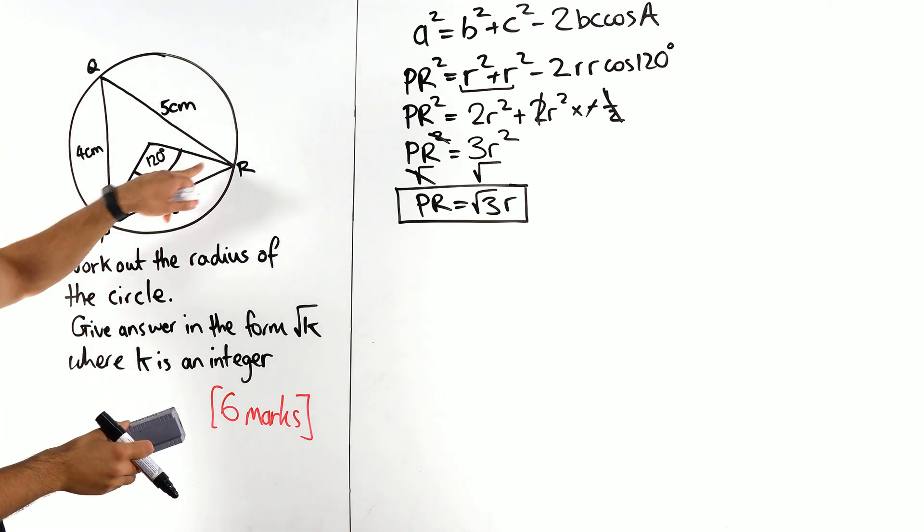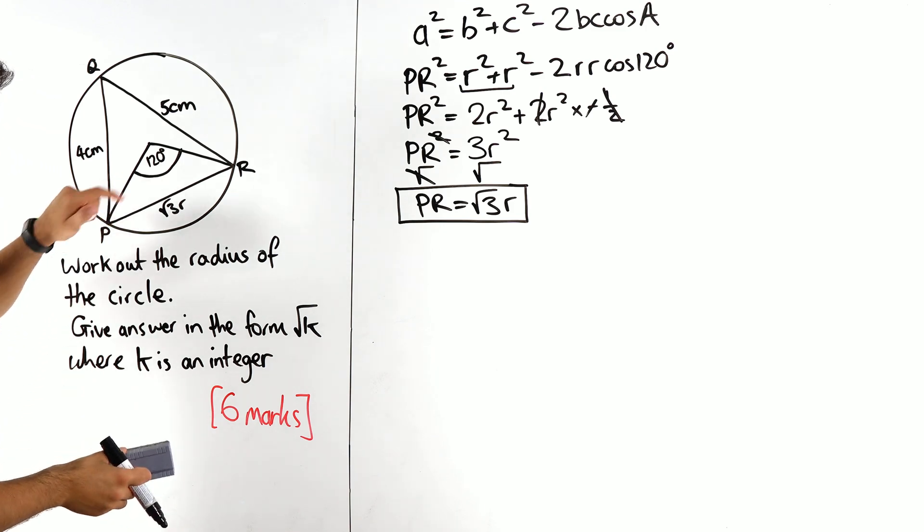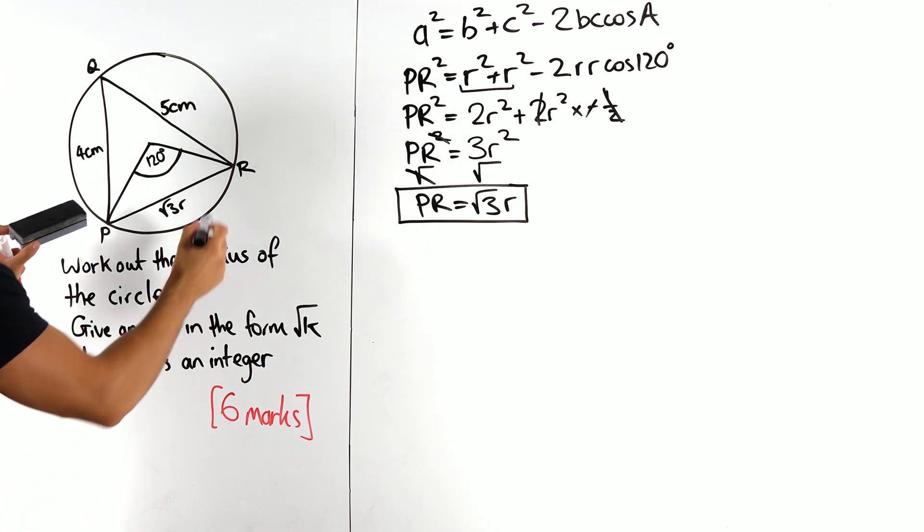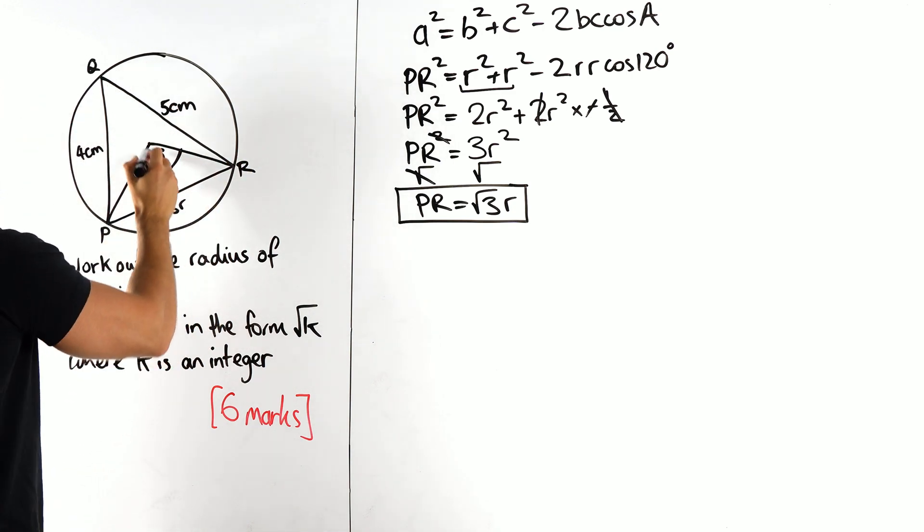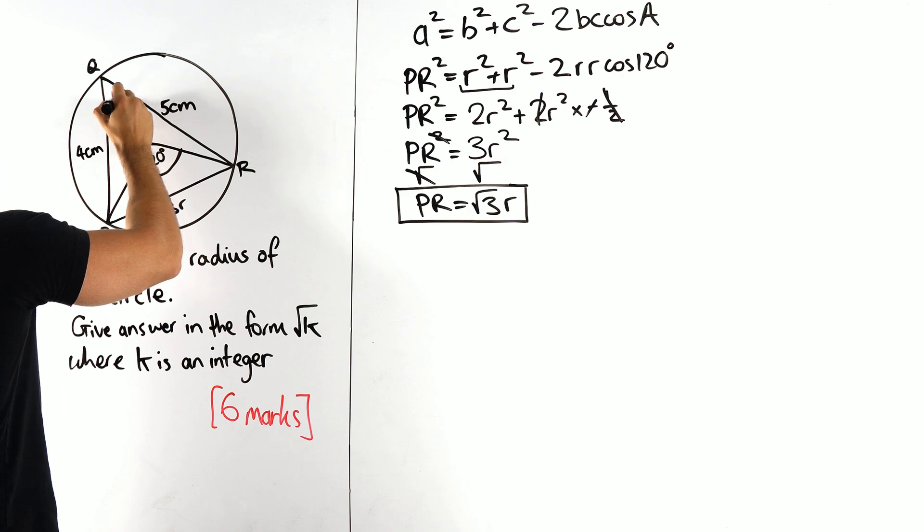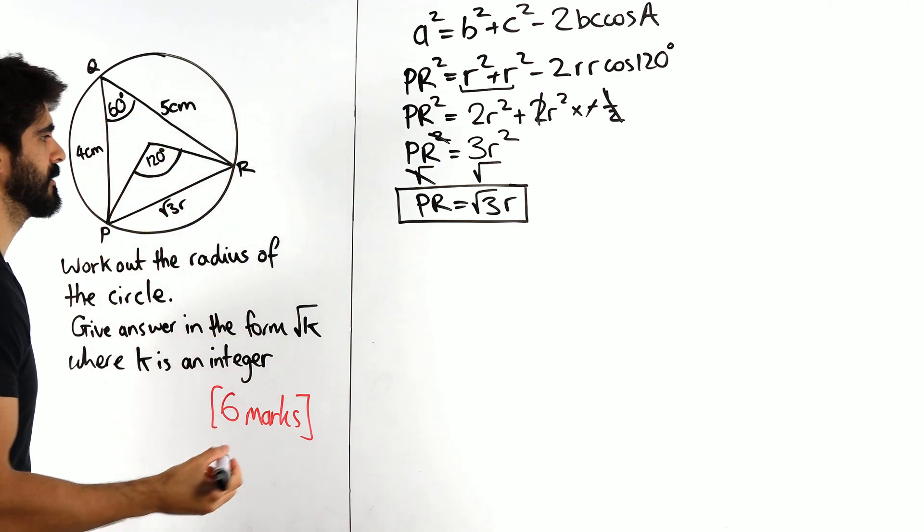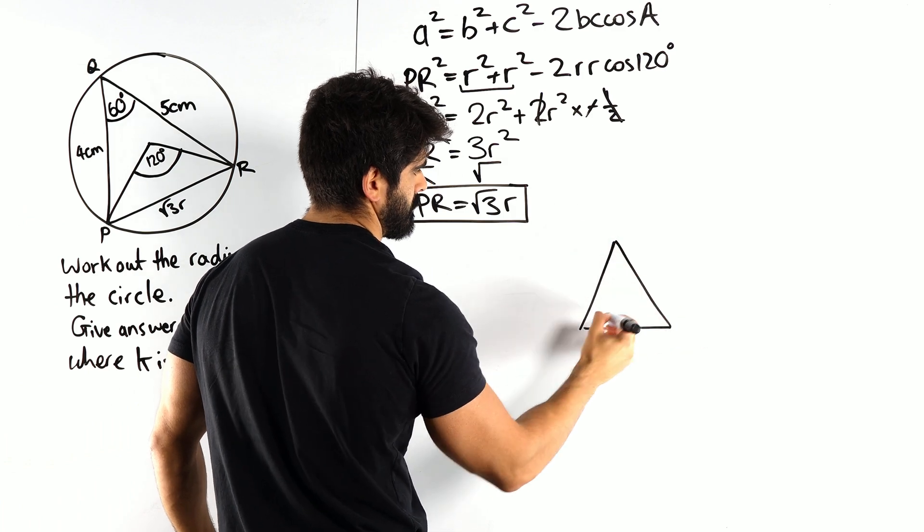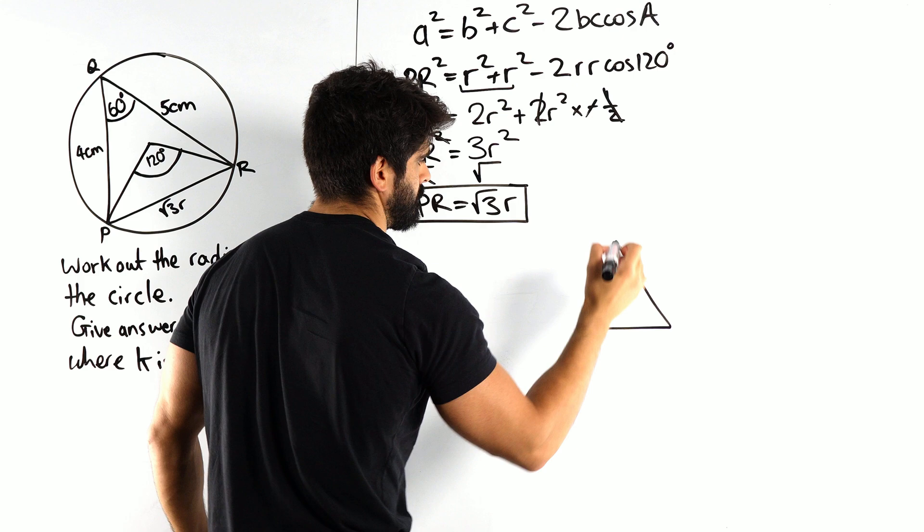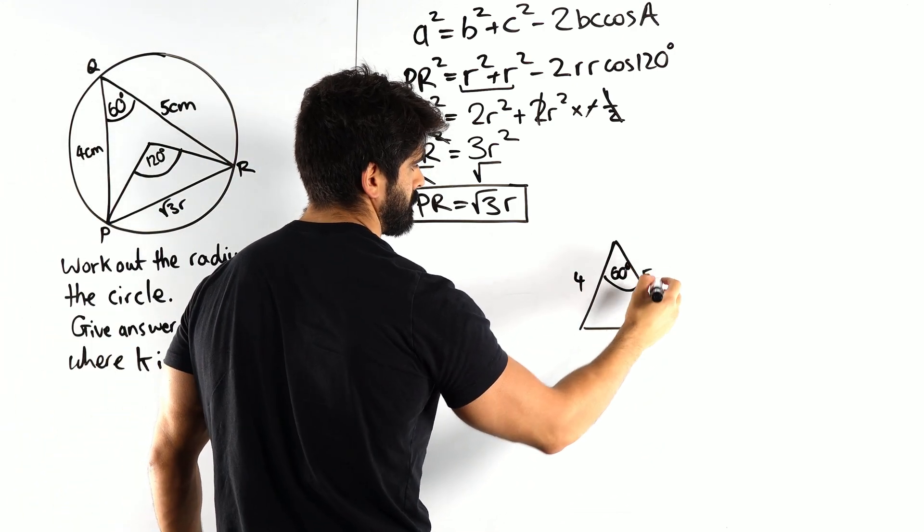How can we connect all these up? We need another angle within the triangle. I can use one of my circle theorems: angle at the center is double angle at the circumference. So this angle here is 60 degrees. Now I have another triangle which can connect all these things up. It looks like this: 60, 4, 5, and root 3r.